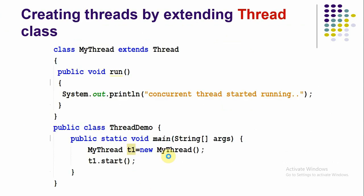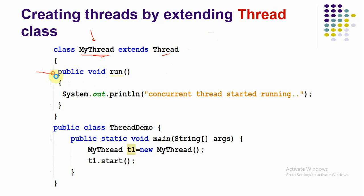Here's an example program. We create a new class using the class keyword, give it any name, and use 'extends Thread'. Since Thread already implements Runnable and has a run() method, we must override it using 'public void run()' and write our thread logic inside.